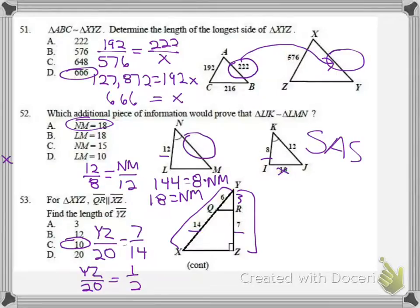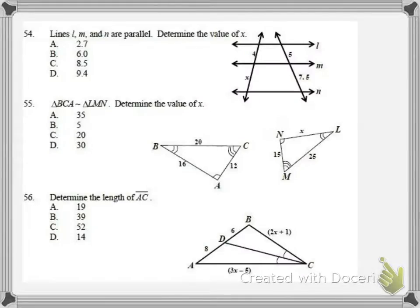Now we get to number 54. We need to find the value of X here. We can set up our proportion as 4 over X equals 5 over 7.5. You could have also done 4 over 5 equals X over 7.5. But in this case, 4 times 7.5 gives us 30 equals 5X. Divide and I get 6 as my answer, or B.